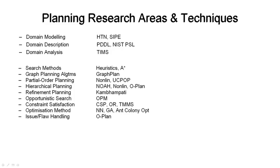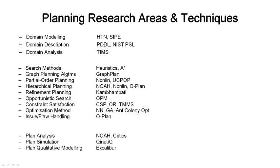The core work in AI planning has been in the search methods and algorithms for creating plans, searching for plans. People have looked at plan analysis because if you can constrain the types of plan you're interested in through analysis, that can limit the search spaces involved.